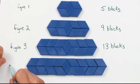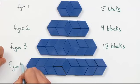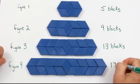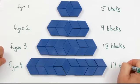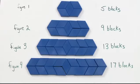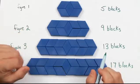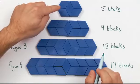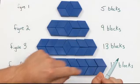So, it looks like figure 4 has 17 blocks. It looks like a pattern rule is start with 5 blocks, then add 4 blocks each time.